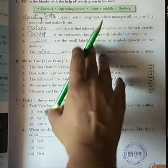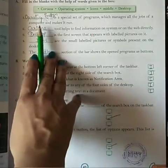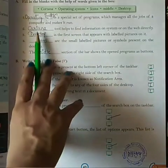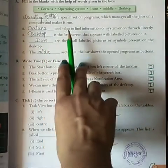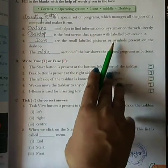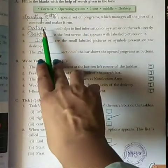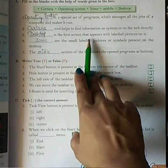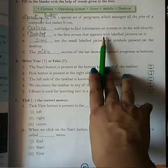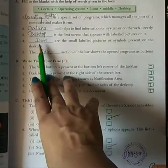Dash is the special setup program which manages all the jobs of the computer and makes it run. Who runs the entire computer? Operating system. Second, Dash tools helps to find information on the system or on the web directly. Kartena, Dash is the first screen that appears in labeled pictures on it. When it appears, which one is? It says desktop.